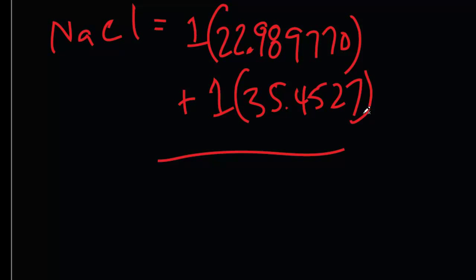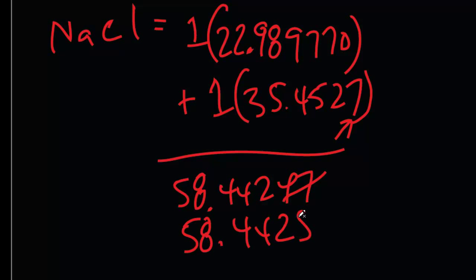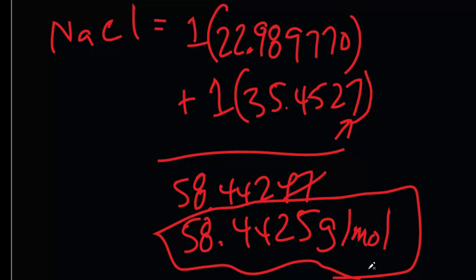But again, the rule for adding significant figures states that we can only go up to 4 decimal places. So we got to make this guy into a 5. Round up. 58.4425 grams per mole. That's how much sodium chloride weighs. In other words, if we had 6.022 times 10 to the 23rd molecules of sodium chloride, it would weigh 58.4425 grams.